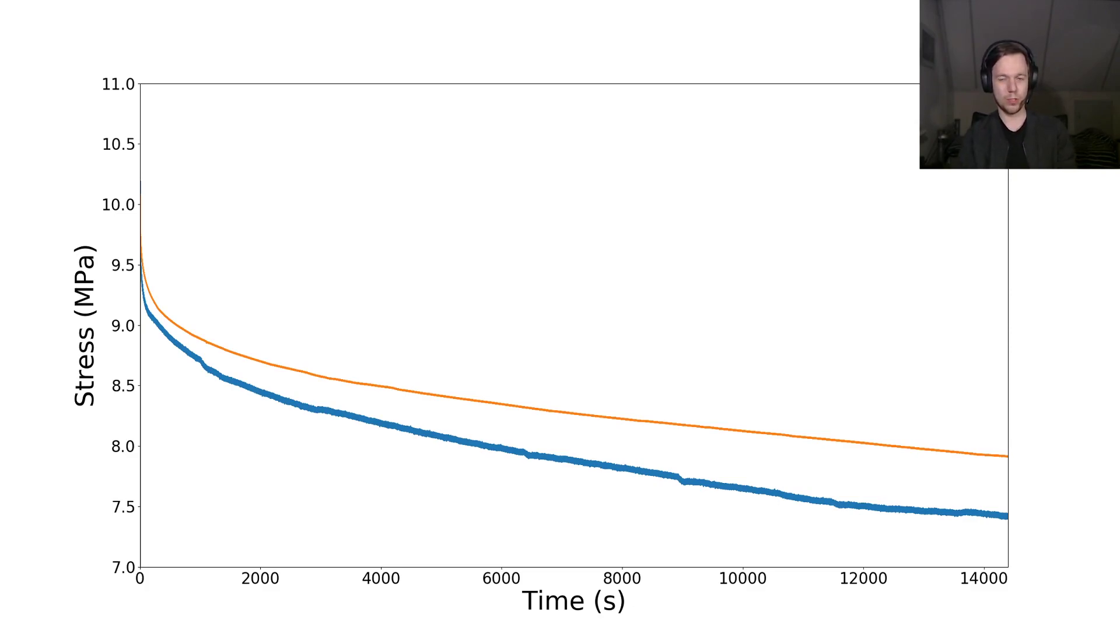Luckily, that's not what we see, which implies that the results that we've seen are not an artifact of the machine or of the experiment. The results that we've seen so far are real. The interesting thing, though, is that the thicker sample actually creeps less than the thinner sample. And this is something that I don't quite understand.